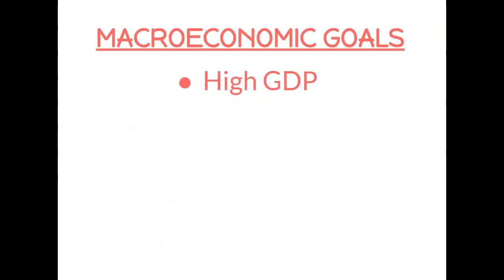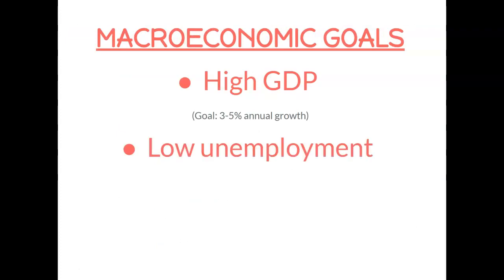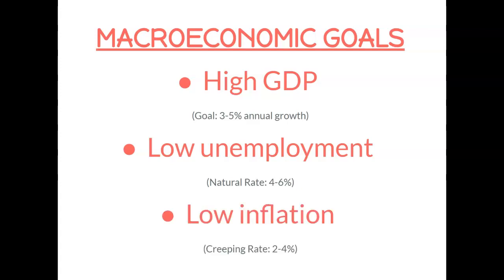Macroeconomic goals include a high GDP — with a goal of three to five percent annual growth — and low unemployment. The natural rate is four to six percent. Double-digit unemployment is not a good thing, but we would expect some unemployment. And then low inflation — we're going to have a creeping rate of about two to four percent. These three things — GDP, unemployment, and inflation — have been the focus of this unit, and they are reflected in the business cycle.